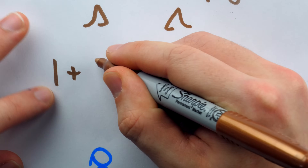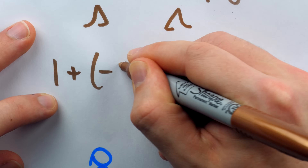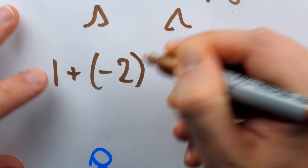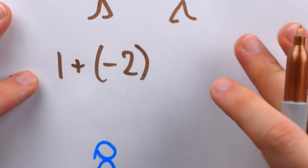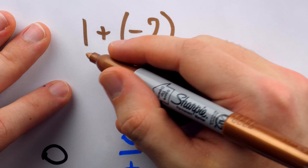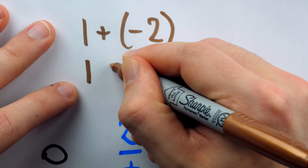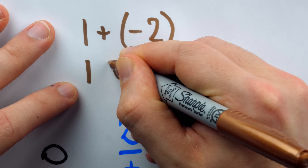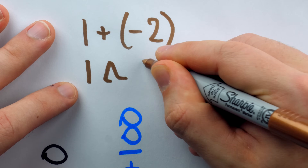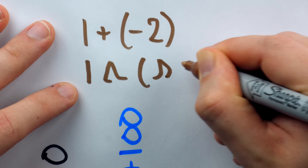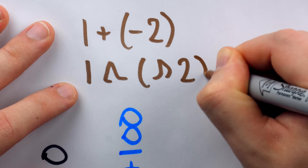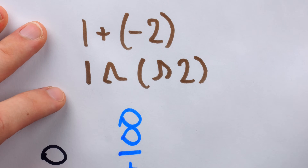If I was to write something like 1 plus negative 2 using the legs — oh god, what would that look like? That is disgusting. I'm very grateful we're not using those symbols today.